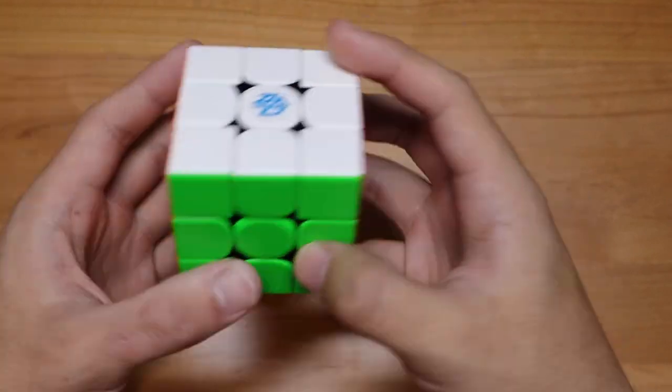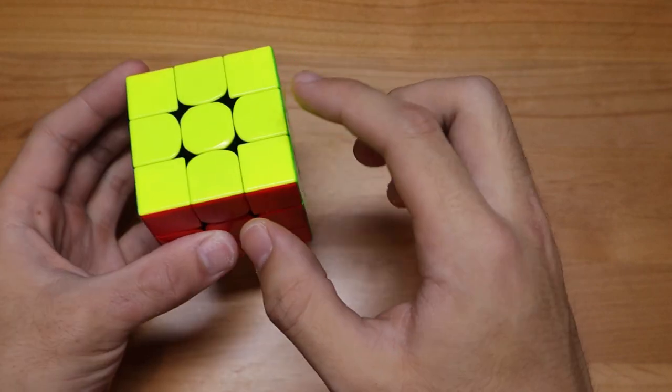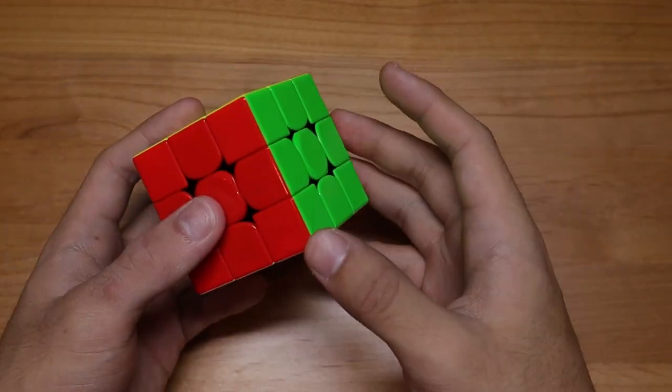For example, next you can try cross plus two pairs, your next two F2L plus EO, and then OLL and PLL.